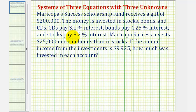Maricopa's scholarship fund receives a gift of $200,000. The money is invested in stocks, bonds, and CDs, where CDs pay 3.1% interest, bonds pay 4.25% interest, and stocks pay 8.2% interest. Maricopa Success invests $25,000 more in bonds than in stocks. If the annual income from the investments is $9,925, how much was invested in each account?